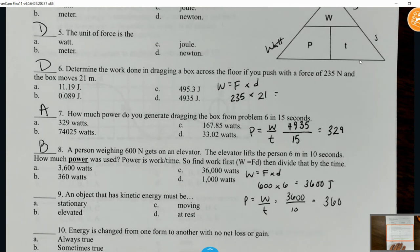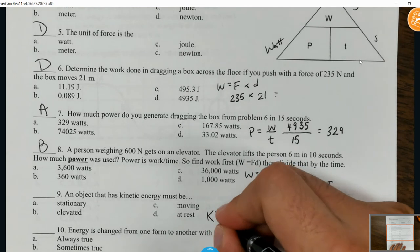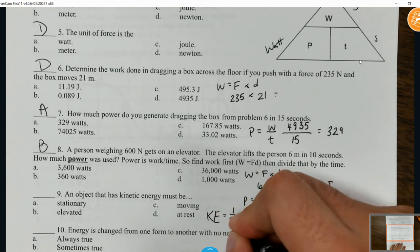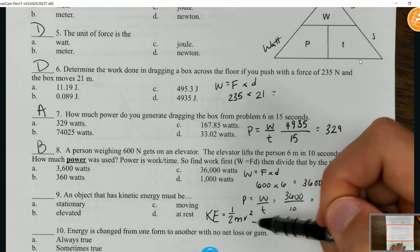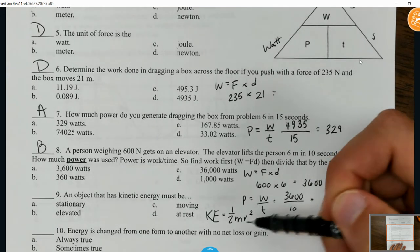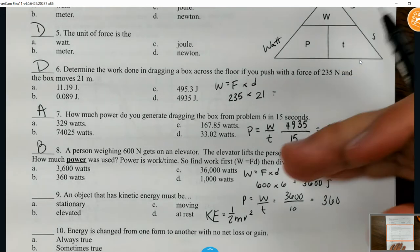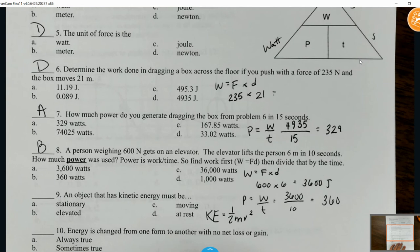Can someone tell me if an object has kinetic energy, what must it be doing? Yeah, it's got to be moving. The equation kinetic energy is one half mv squared. It's very important that the object is moving. If the object is not moving, there is no kinetic energy.